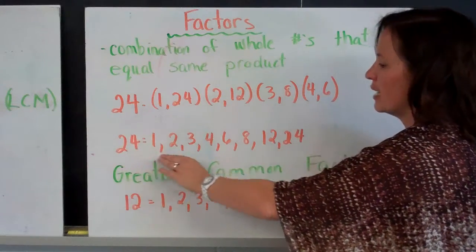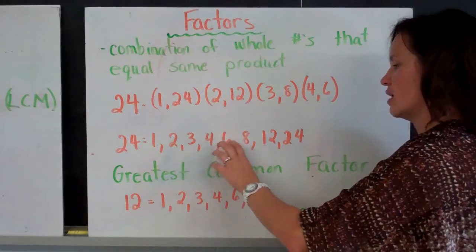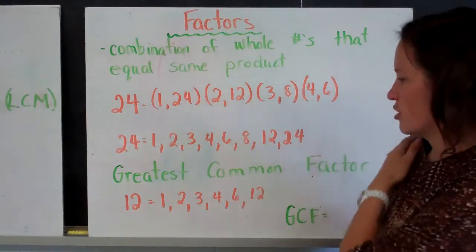They should be written out in numerical order. So it should read 24 equals 1, 2, 3, 4, 6, 8, 12, 24. It's just more organized, and it's easier to manipulate and use for other questions.